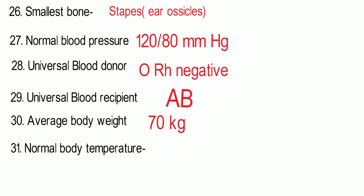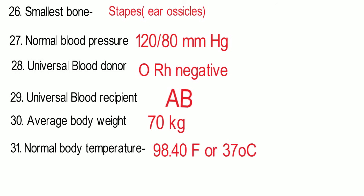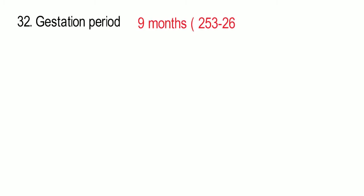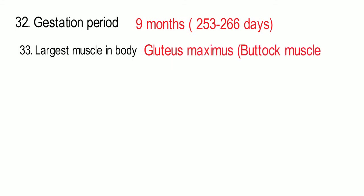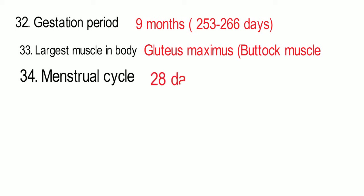Normal body temperature can be expressed in both Fahrenheit and degrees Celsius. The gestation period in human females is 9 months, meaning 253 to 266 days. The largest muscle in the body is the gluteus maximus, which is the buttock muscle. The menstrual cycle is 28 days.